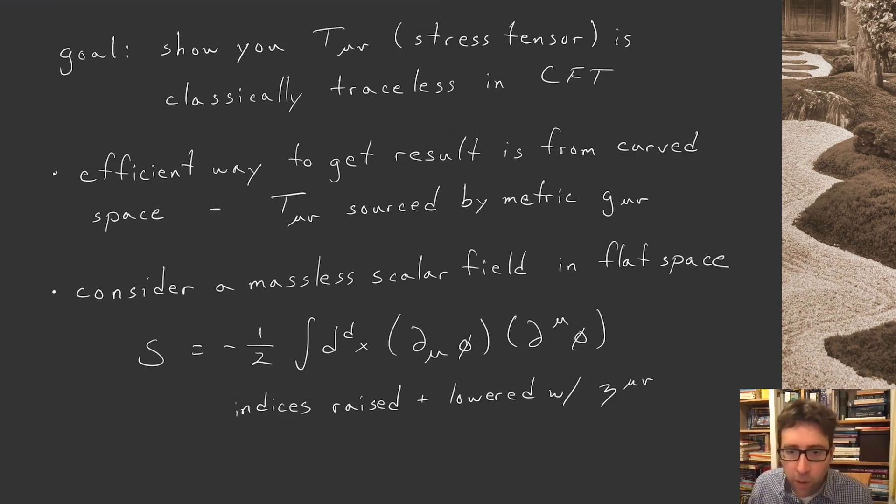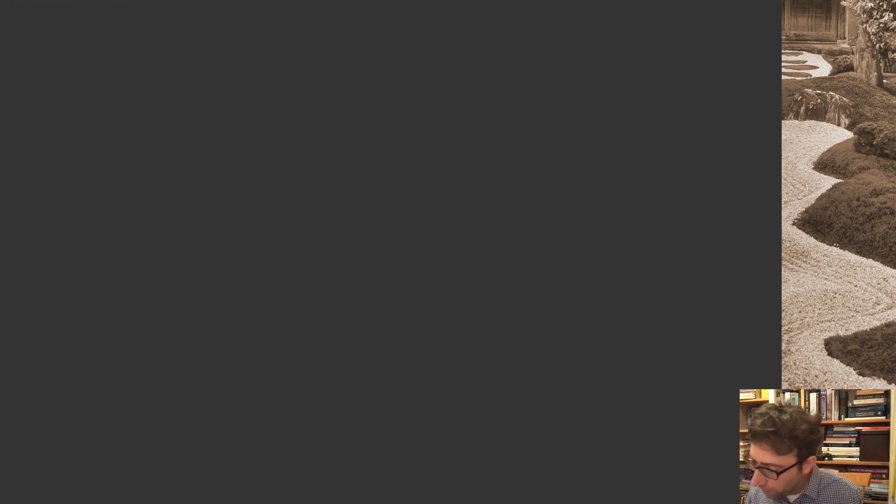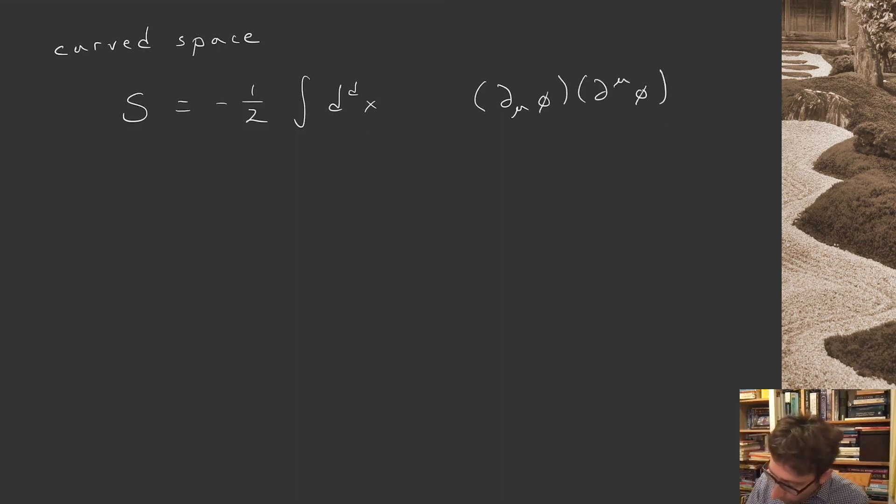There's a very pedestrian way to lift this to curved space. In curved space, we write basically the same thing. We have an S, a factor of a half, an integral over curved space, and then ∂_μ φ ∂^μ φ, where now the indices are raised and lowered with the metric, the full curved space metric of spacetime.